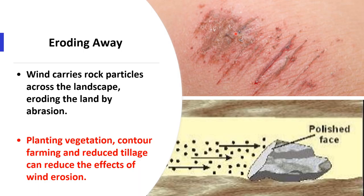On the other hand, when it comes to prevention of erosion, planting vegetation, contour farming, and reduced tillage can basically decrease the effect of wind erosion, because vegetables and any type of plants have roots — solid roots — so they hold the soil and act as a prevention or slowing down of erosion.